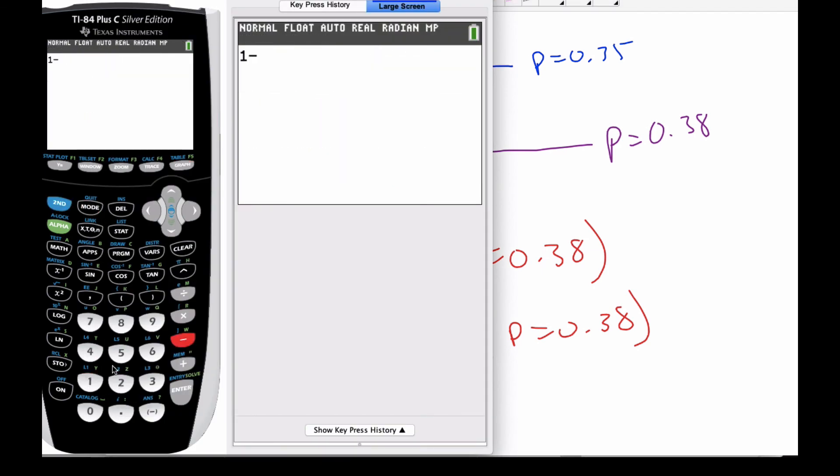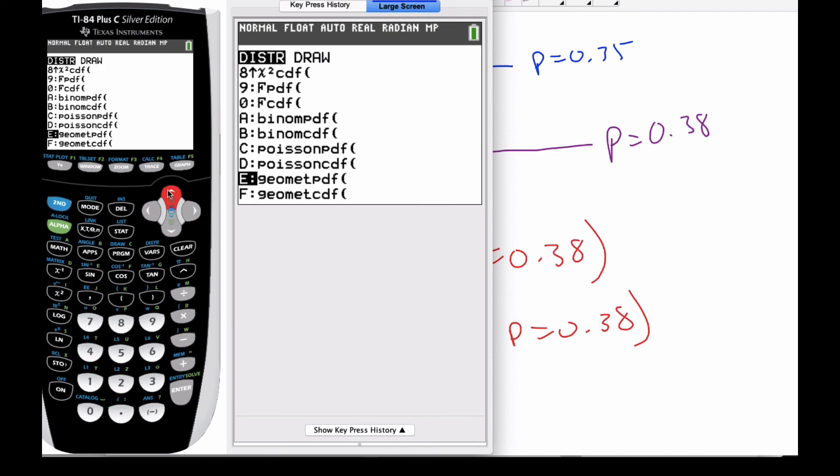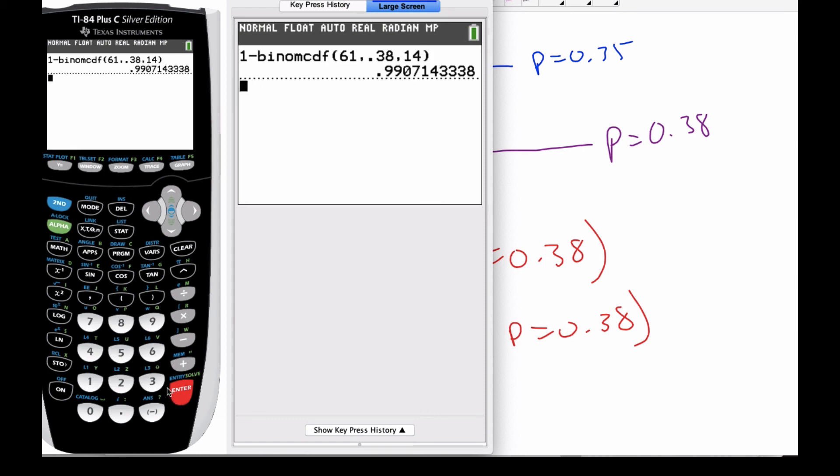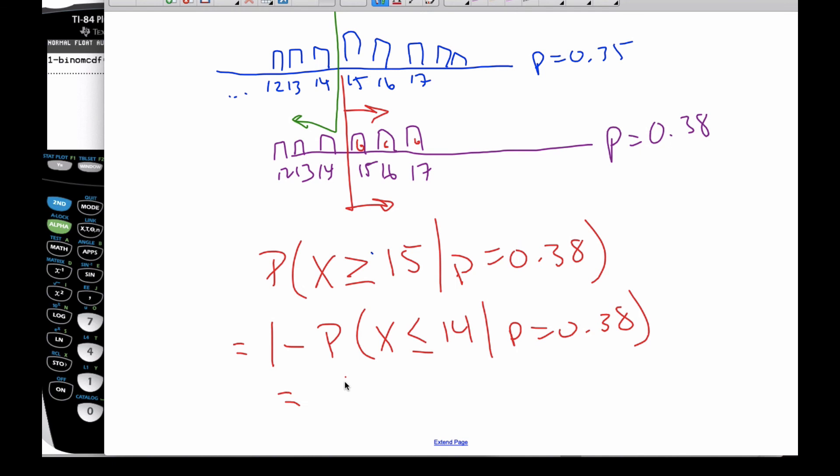When I do this calculation now, 1 minus the probability of binomial CDF. I know it's 61, this is 0.38, I want this to be 14, I get a probability of 0.991. 0.991 is my probability of a Type 2, which is quite high.